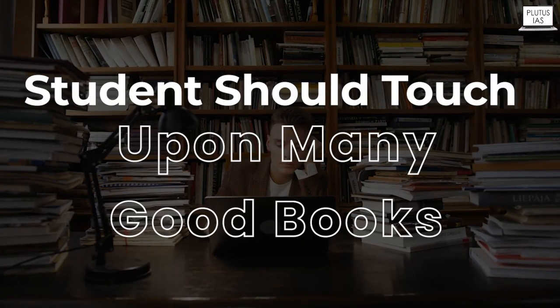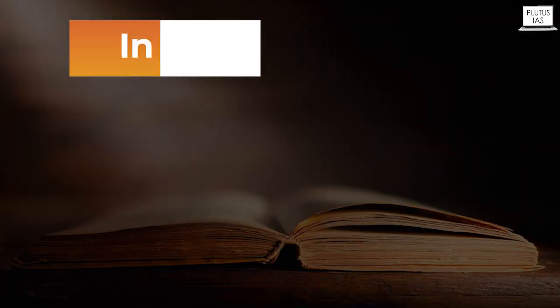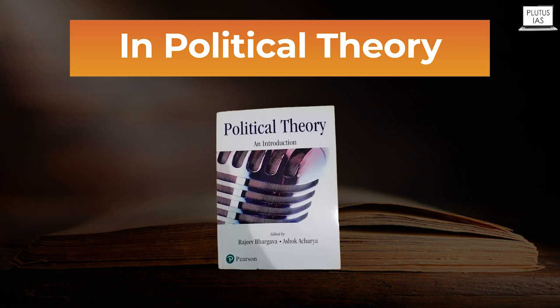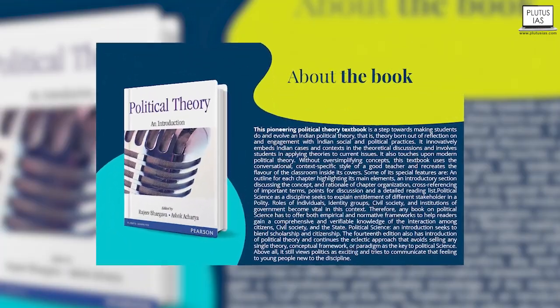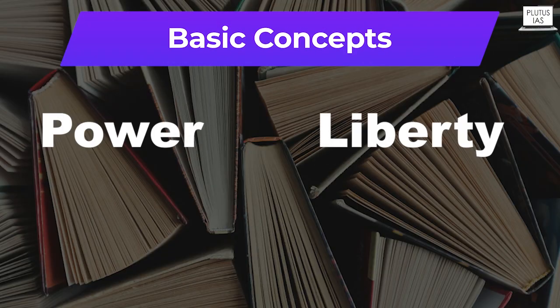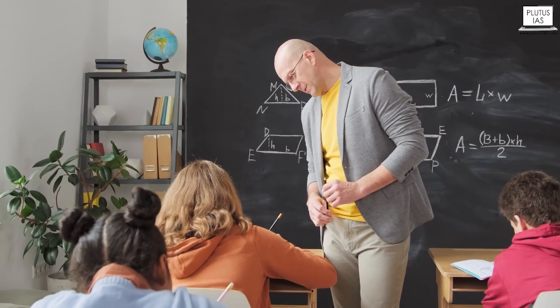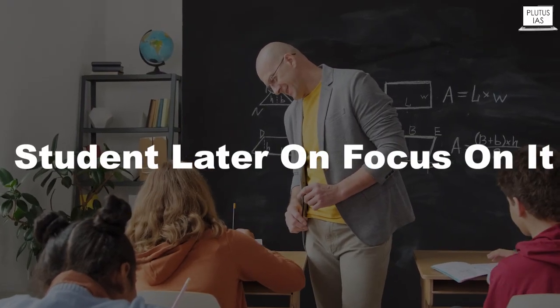Students should touch upon many good books, but one book would not be sufficient. There are multiple books. For example, in political theory, there is one book by Rajiv Bhargava and Sokasharia, published by Pearson. It is a good book, but if you look at the language of this book, it is thick. Therefore, in order to understand basic concepts like power, liberty, rights, or democracy, one needs a mentor, a guide, so that the guide can solve the issue and the student can later focus on it.